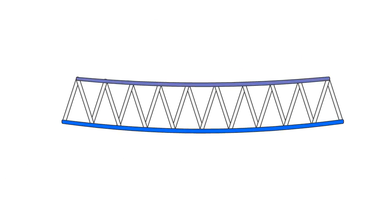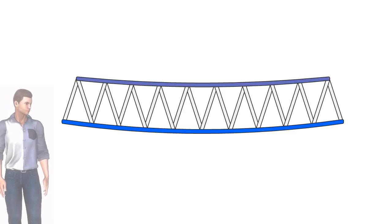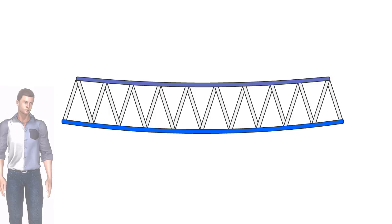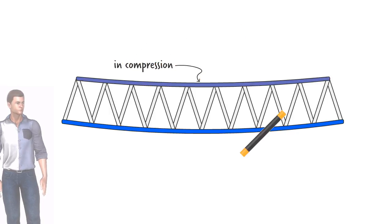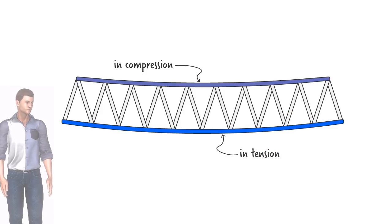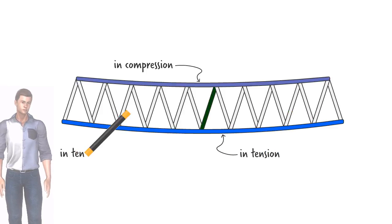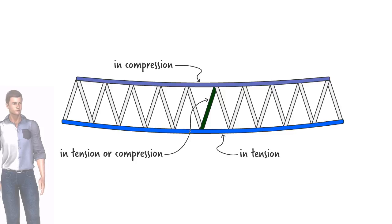Let's start by making an important observation. Regardless of the position and length of the distributed load applied to the bridge, the top cord of the truss will always be in compression while the bottom cord will be in tension. But the inclined member could either be in compression or tension depending on the position of the load.